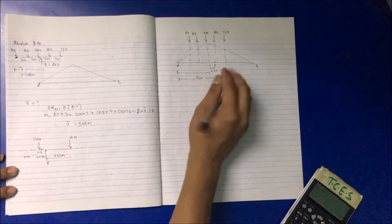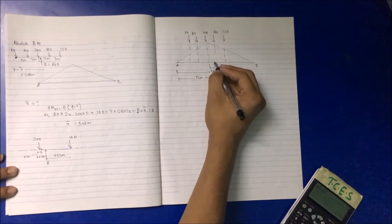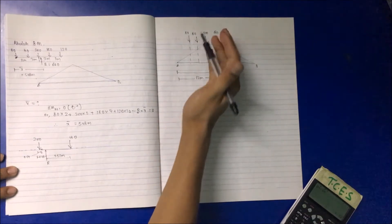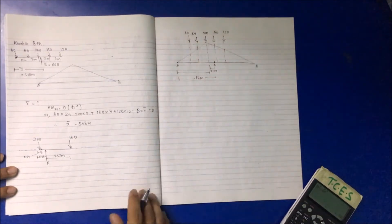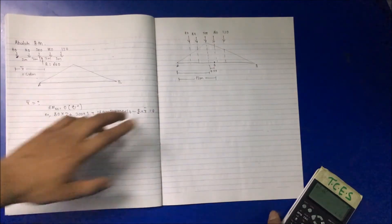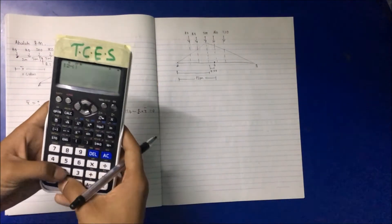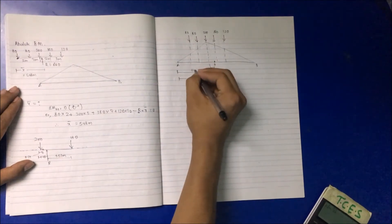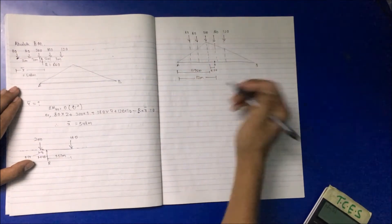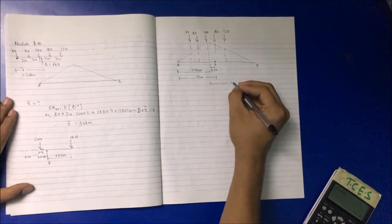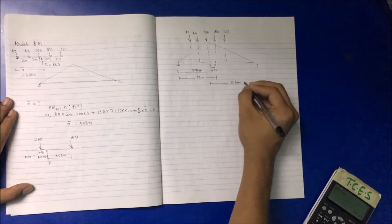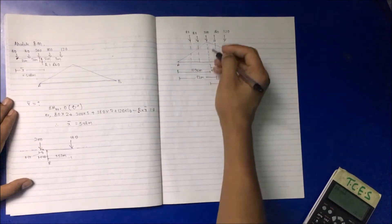The distance from the left support to the maximum bending moment point is not 12 meters but 12 minus 0.24, which equals 11.76 meters. The remaining part from the right is 24 minus 11.76, which equals 12.24 meters.